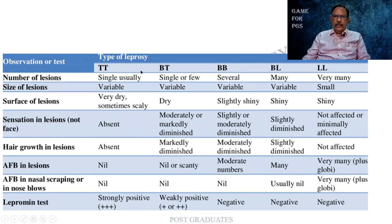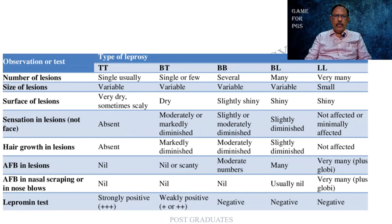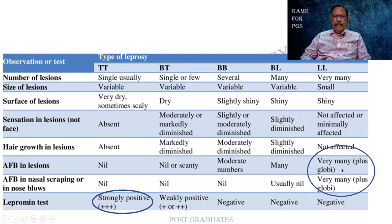This table shows clinical presentations and the lepromine test alongside the types of leprosy. Two key points to remember: the lepromine test is strongly positive for tuberculoid type of leprosy; in lepromatous leprosy there will be many bacilli and globi, and they may also be found in nasal scrapings. At one extreme, too many bacteria; at the other extreme, a strongly positive lepromine test. That much we shall remember.